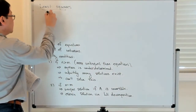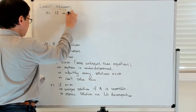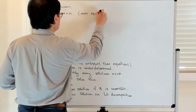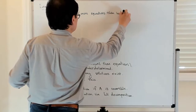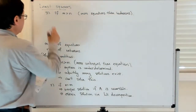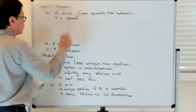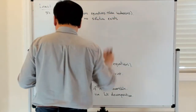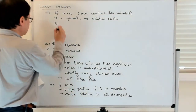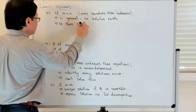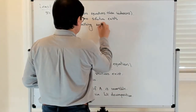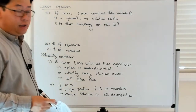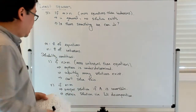The third case is if m is greater than n — so m is the number of equations and you have more equations than unknowns. In general, no solution exists. The question is, is there something we can do in this case? Let's look at an example of a problem where you have more equations than unknowns, and work through the process of deciding how to address this question.